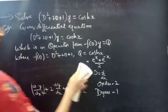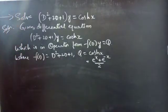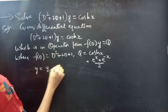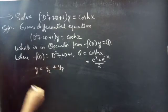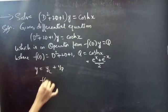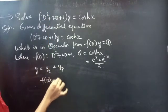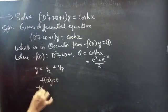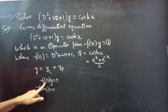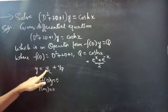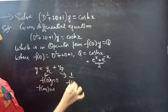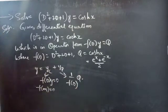Coming to the problem, we need to find the general solution, which is given by y = yc + yp. We consider the homogeneous equation f(D)·y = 0 and use the auxiliary equation f(m) = 0 to find yc, and find yp using (1/f(D))·Q.